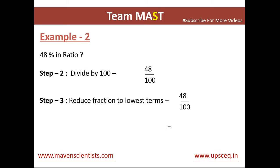In example 2, we have 48%. We divide by 100 again to get 48 divided by 100. When we simplify the terms, we get 12 divided by 25, which is the lowest fraction and the answer for 48% in ratio.